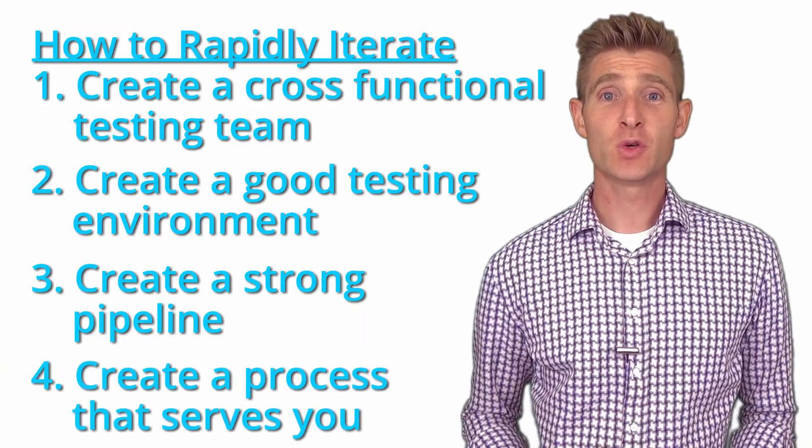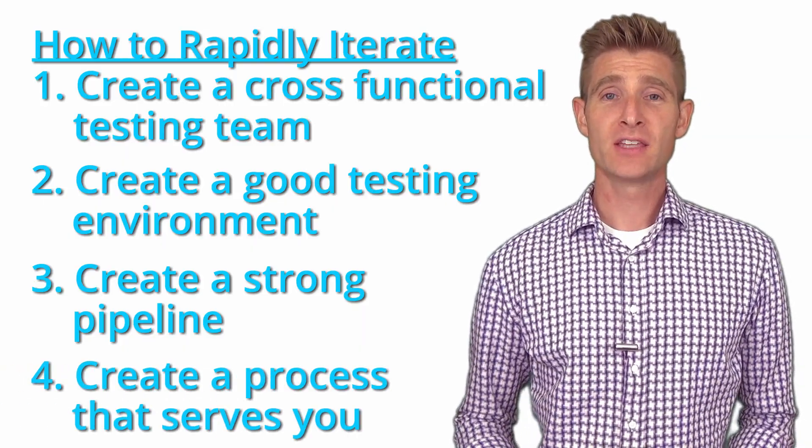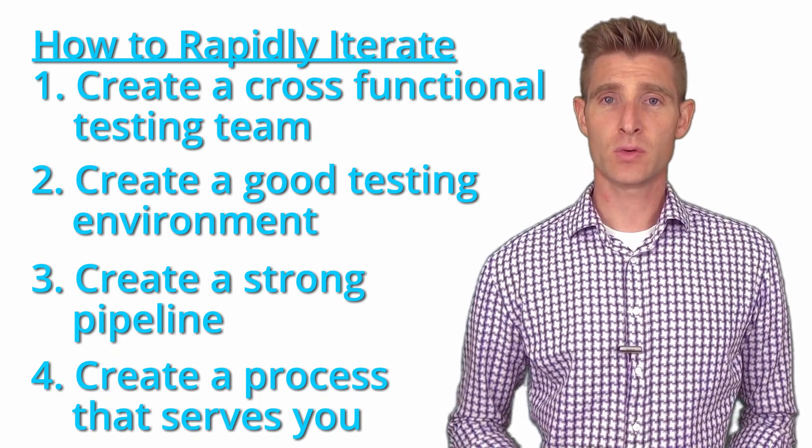The fourth tip to be able to rapidly iterate is to create a testing process that serves you. A good process will help you go faster — it's not something you're a slave to, it's your servant. It's helping you go faster, helping you create more, helping you do good things. If you don't have a testing process, you're missing out and you're not going as fast as you could. Those are your four tips to rapidly iterate the right way using causal, testing data.